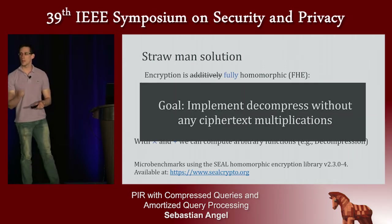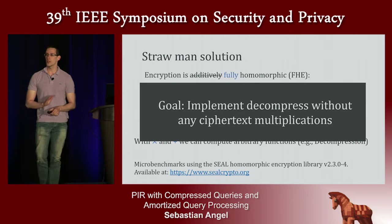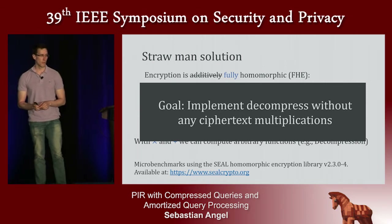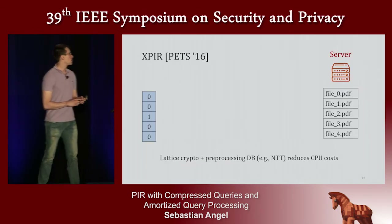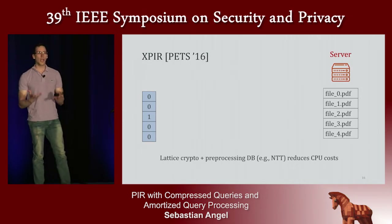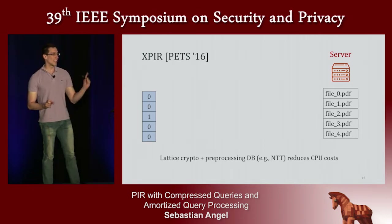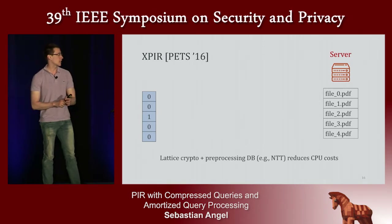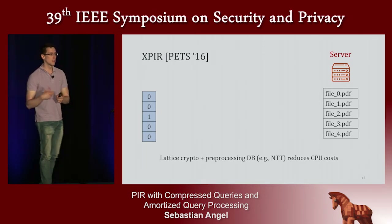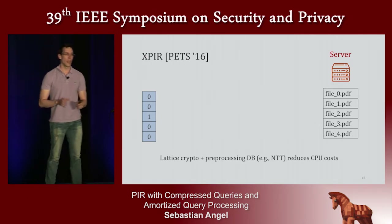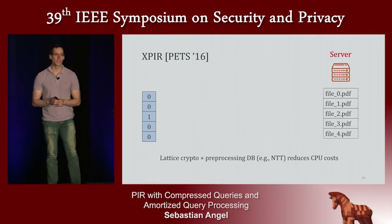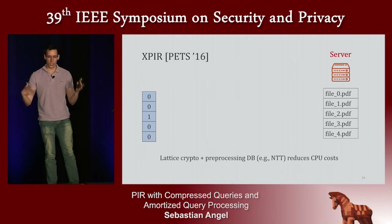Our goal is to implement this decompression function without using any multiplications at all. To explain how we do this, let me first present XPIR. XPIR essentially implements Stern's protocol but with one key optimization: instead of using, say, the Paillier cryptosystem, ciphertexts come from a lattice-based cryptosystem. You pre-process the database, and the result is that all homomorphic operations become much more efficient.